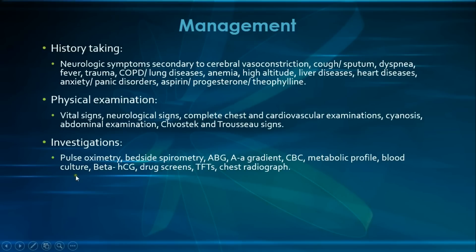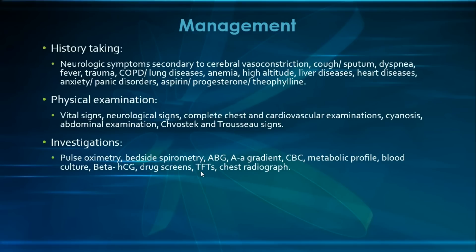A blood culture may be needed if sepsis is suspected, along with culture of any relevant fluid such as CSF or urine. We would also measure beta-HCG in females of child-bearing age to exclude pregnancy. If the patient is suspected to have ingested some drug, we would perform a drug screen, especially for aspirin or theophylline. If required, we would also do thyroid function tests looking for hyperthyroidism, as hyperthyroidism can also cause hyperventilation through direct stimulation of the chemoreceptors.